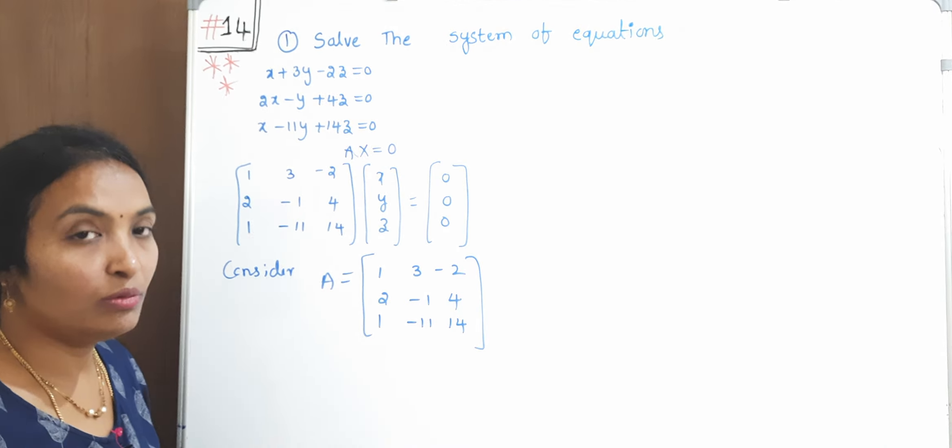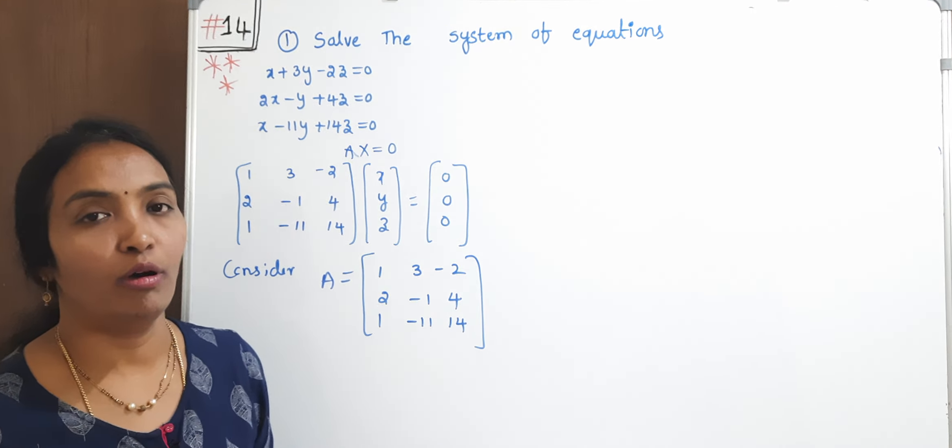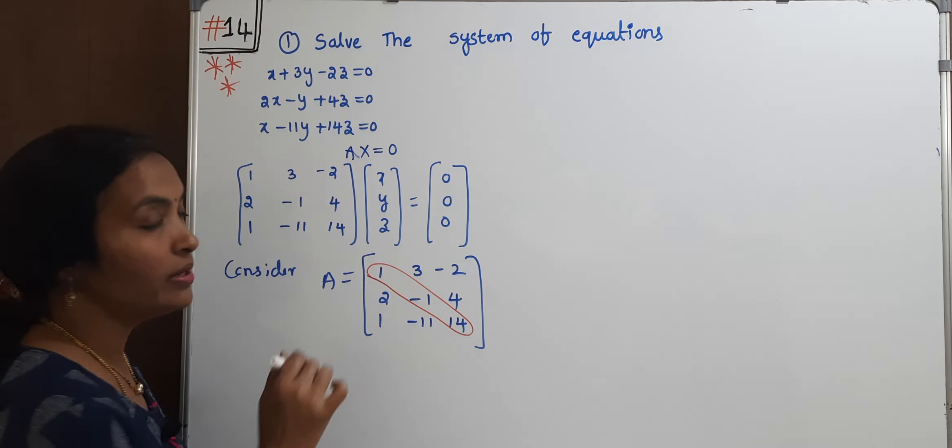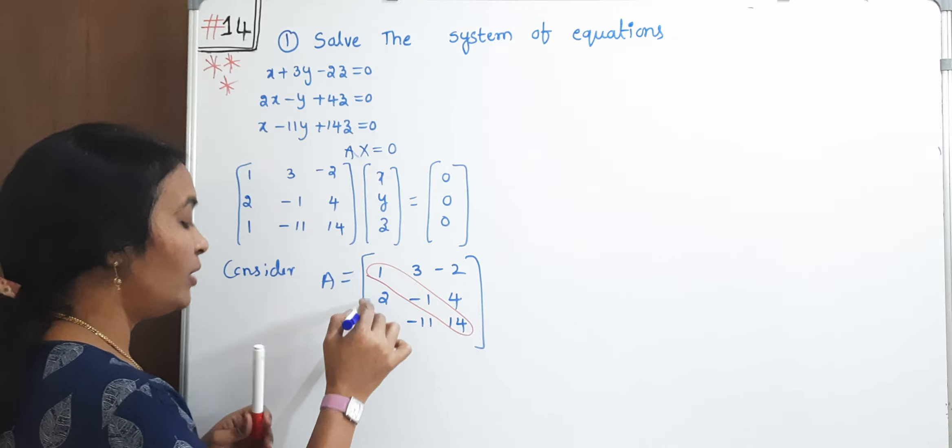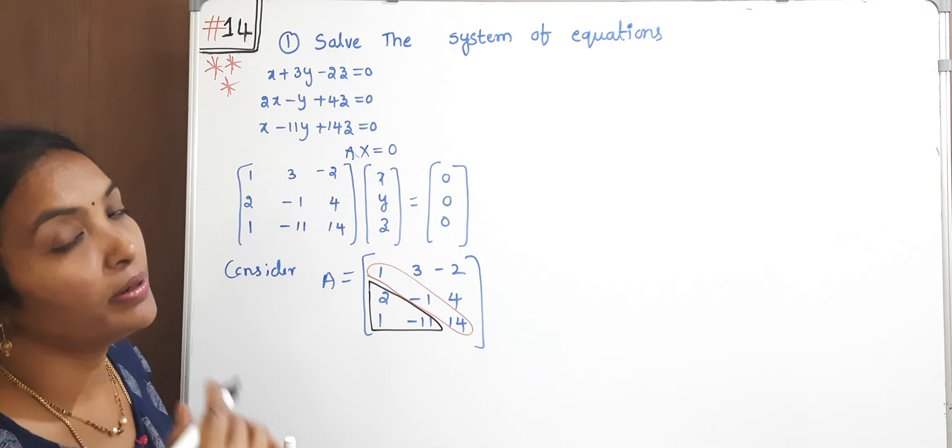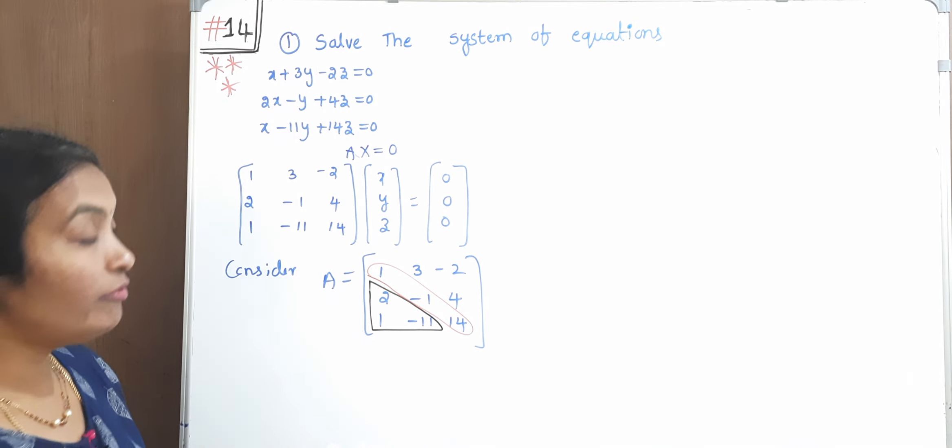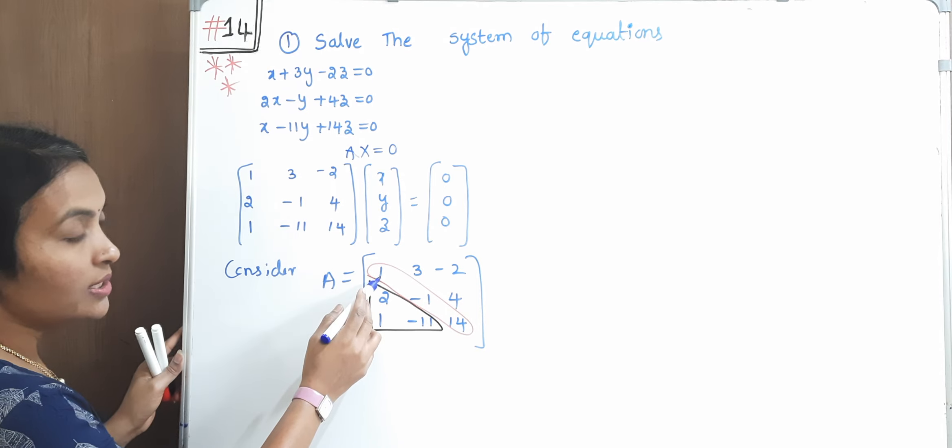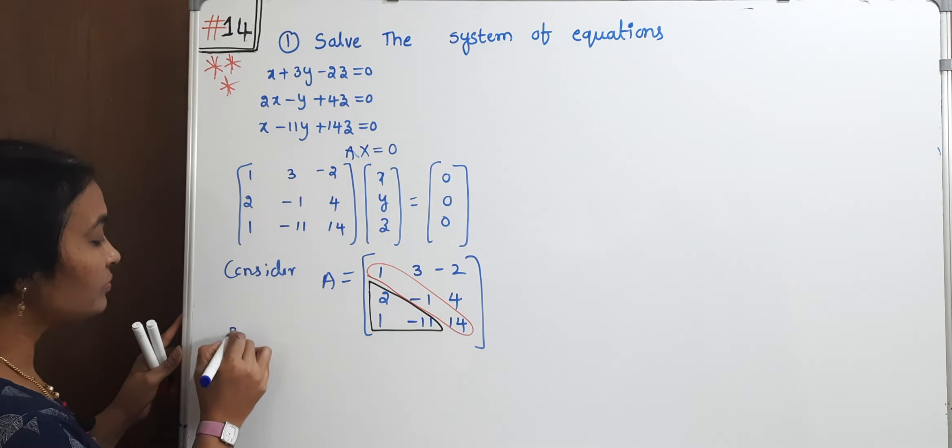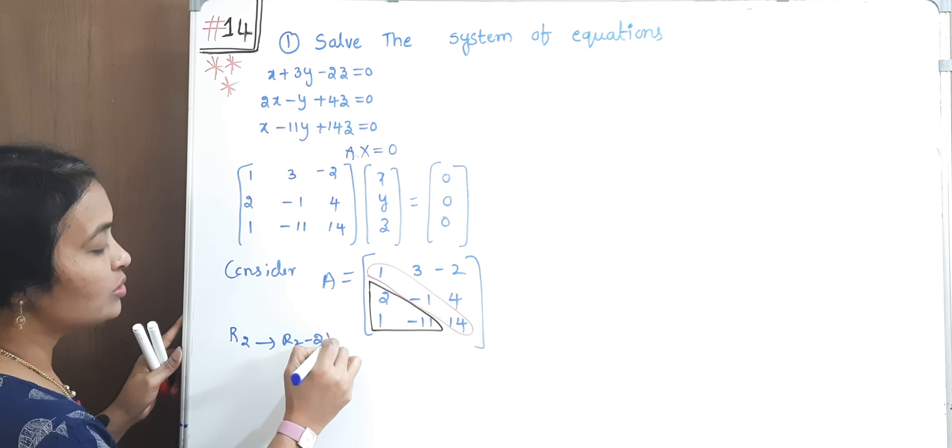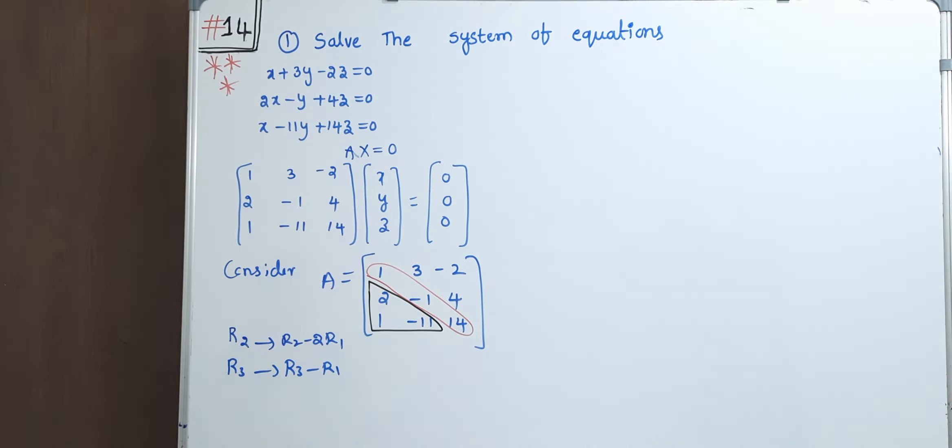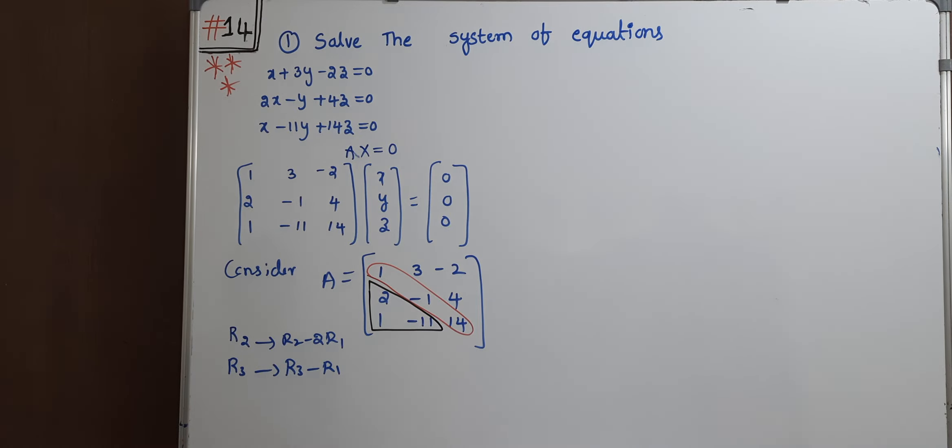After that, what we have to do? Reducing this matrix into echelon form. Below the principal diagonals it should be zero. Is it clear? In echelon form, elements below the principle diagonal should be zero, then we'll have an upper triangular matrix. For that, by using this element which is already 1, cooperation is easy. R2 implies R2 minus 2R1, R3 implies R3 minus R1.